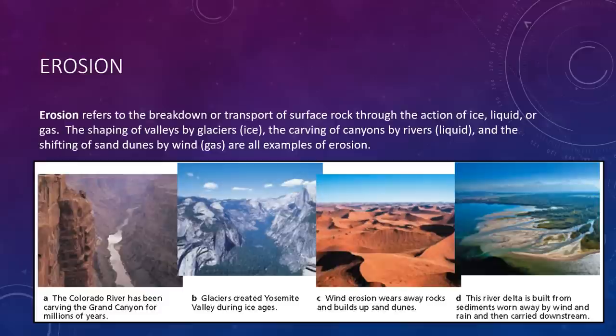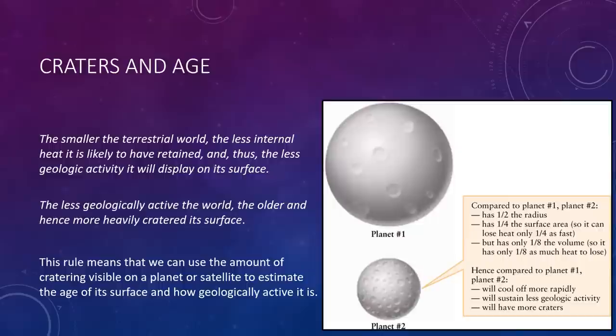Our last of the four geological processes that shapes a planetary surface is erosion. This one's pretty simple. It refers to the breakdown or transport of surface rock through the actions of ice, liquid, or gas. The shaping of valleys by glaciers, the carvings of canyons by rivers, and the shiftings of sand dunes by wind are all examples of erosion. Note that although we often associate erosion with breakdown, it also builds things up such as sand dunes, river deltas, and lake bed deposits.